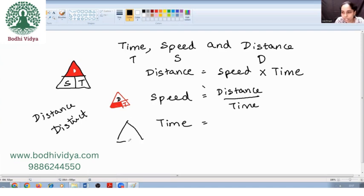The last one is time. D, S, and T. What would time be? Take a guess. We need to find time, so what is it? It is nothing but distance divided by speed.